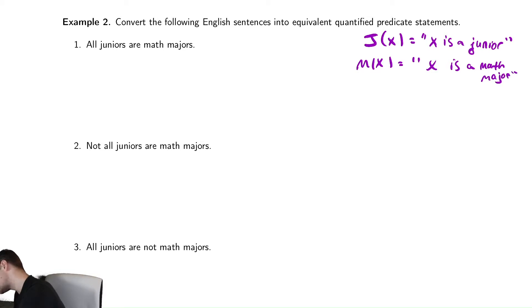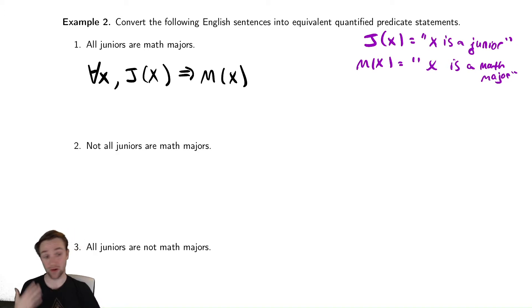The first statement we're going to try to translate is all juniors are math majors. We've seen similar sentences in our previous example. If you want to say all of type A are of type B, you write that as, for every x, if it is of type A, which in this case is junior, then it is a math major. That says, for all x, if x is a junior, then it is a math major. In English, you would write that as all juniors are math majors. All things of type A are also of type B.